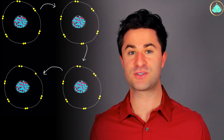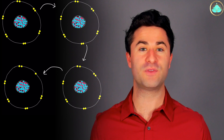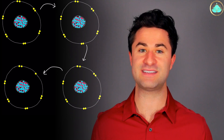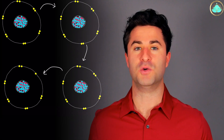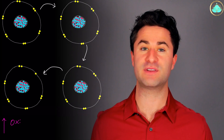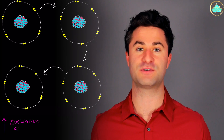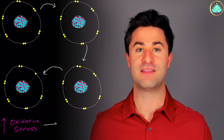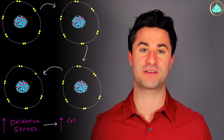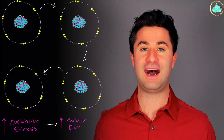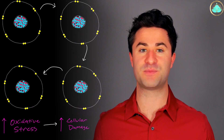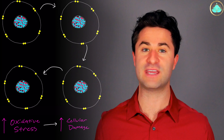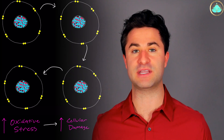By stealing electrons, it actually creates more free radicals that are also looking for their electrical soulmate. This creates a chain reaction that can lead to cellular damage, misfolded and misfunctioning proteins, and ultimately damage to the DNA itself. When this occurs frequently, it leads to higher levels of oxidative stress. Oxidative stress is the imbalance between free radical creation and your body's ability to neutralize them.